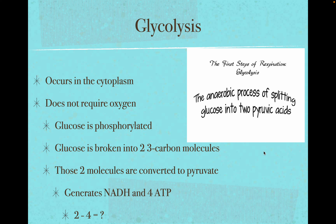Glycolysis occurs in the cytoplasm, does not require oxygen, doesn't require any organelles. All organisms can do glycolysis, prokaryotic and eukaryotic. Glucose does get phosphorylated, so you have to invest a little bit of ATP in the process. But when glucose is broken down into two three-carbon molecules called pyruvate, you get a gain of four ATPs. If you've invested two and made four, you get a net gain of two ATP — not a lot, but enough to keep many cells going.